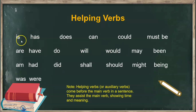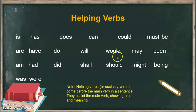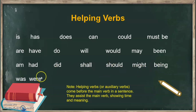Let us read our helping verbs: is, has, does, can, could, must, be, are, have, do, will, would, may, been, am, had, did, shall, should, might, being, was, and were.